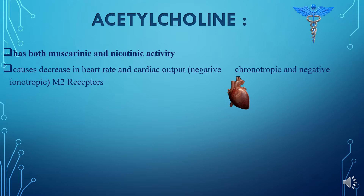The inotropic effect indicates the contraction of the heart. If contraction is greater, it shows positive inotropic effect; if contraction is slower, it shows negative inotropic effect. Positive inotropic effect results in greater cardiac output, while negative inotropic effect results in lower cardiac output.